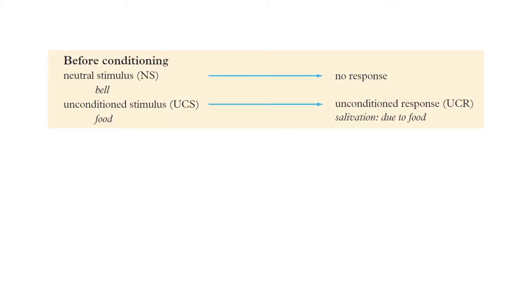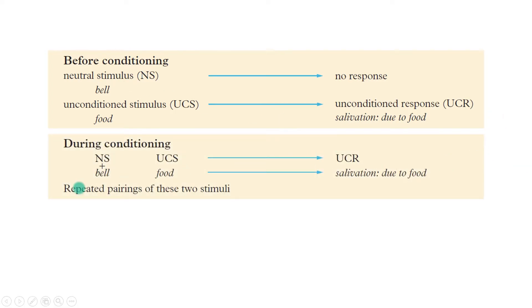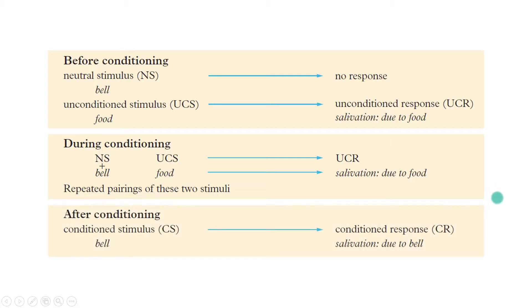Before conditioning, you have your unconditioned stimulus naturally causing an unconditioned response, and then you've also got this neutral stimulus that doesn't really have anything to do with it. But then conditioning occurs in which these two things are paired, and if that happens frequently enough, after conditioning the neutral stimulus on its own results in a conditioned response, meaning that it is now a conditioned stimulus.